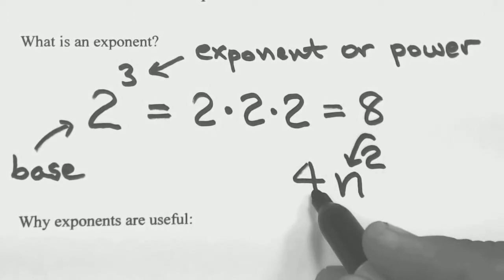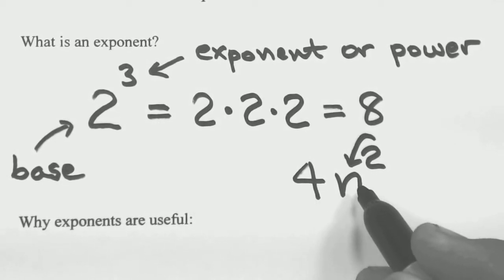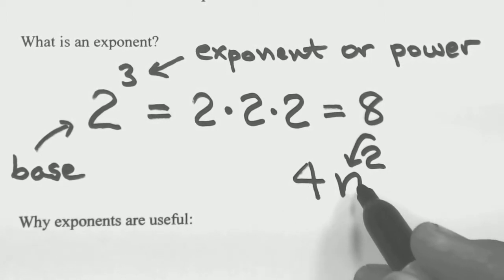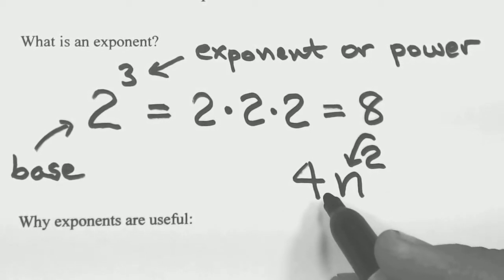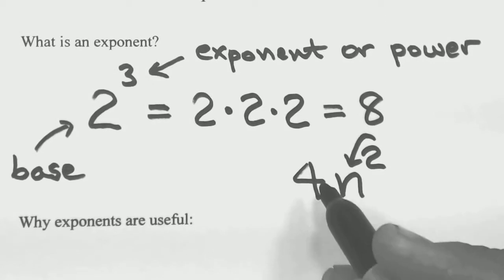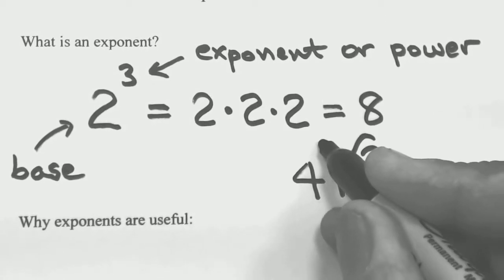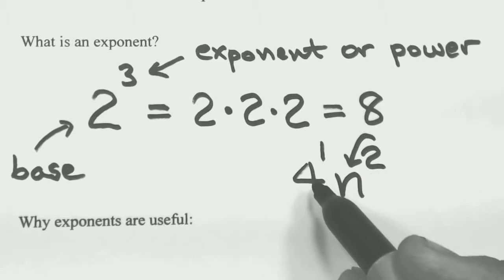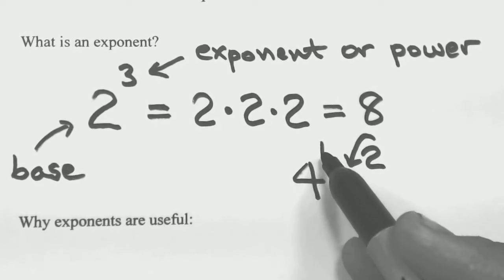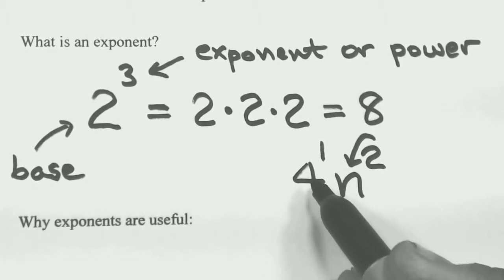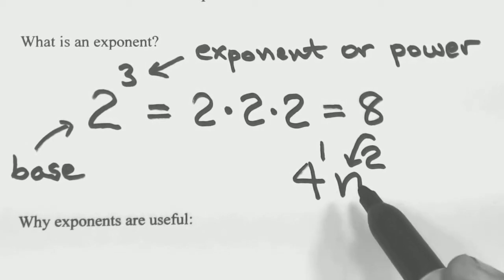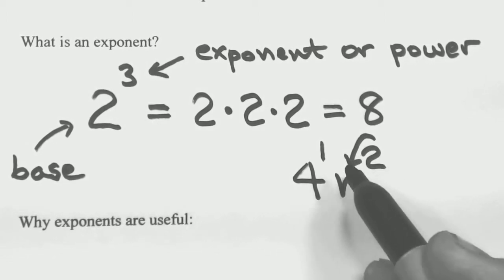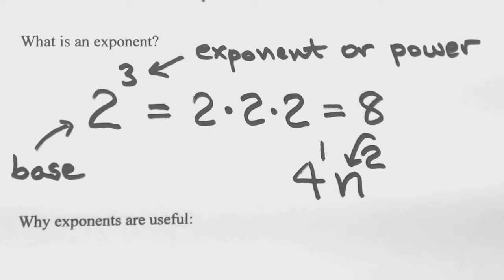All numbers you've ever written, whether plain numbers or variables, officially have an exponent. If you don't see the exponent — like the 4 here — you assume that the exponent is 1. So this is 4 to the 1st power, which means just a single 4. The only guy being squared here is the n.